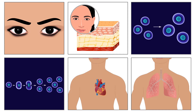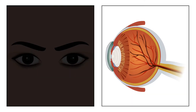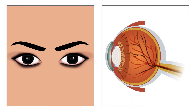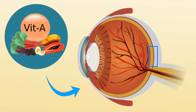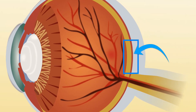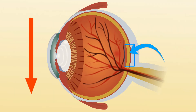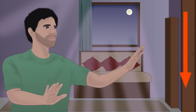Vitamin A is essential for many physiological processes. It plays a crucial role in vision and supports proper functioning of the eyes. Vitamin A is also required for the formation of rhodopsin, a pigment in the eyes which helps us to see at night. Lack of rhodopsin will cause significantly reduced ability to see in dim light.